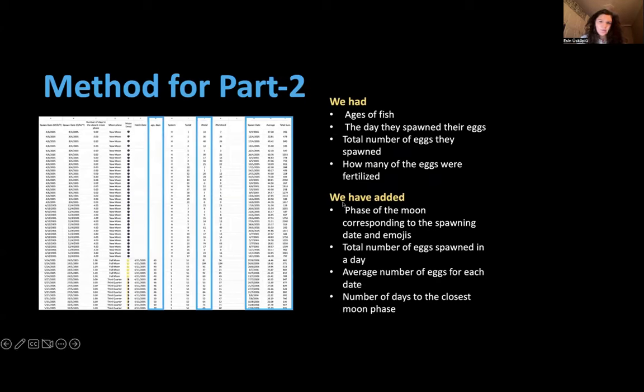This is the beginning of our part two, the analysis. We were given the number of eggs, the age of the fish that spawned these eggs, and the time of year from 2005 till 2024 that these eggs were spawned. We have the total number of eggs and the fertilized eggs but we didn't use it.